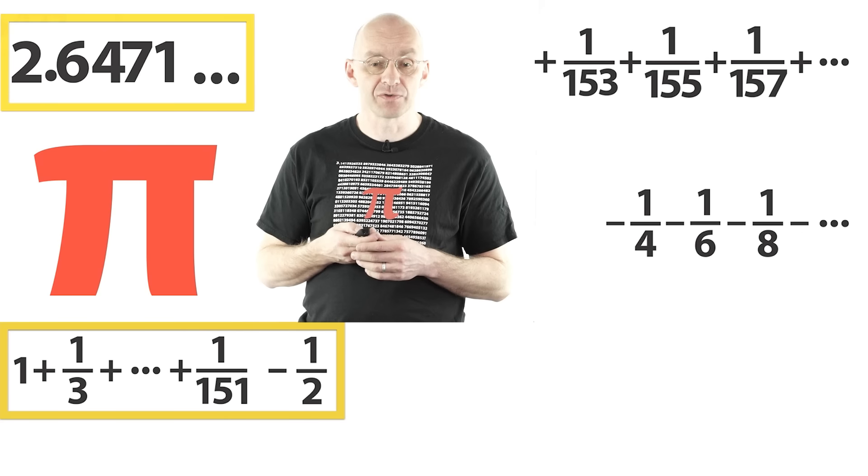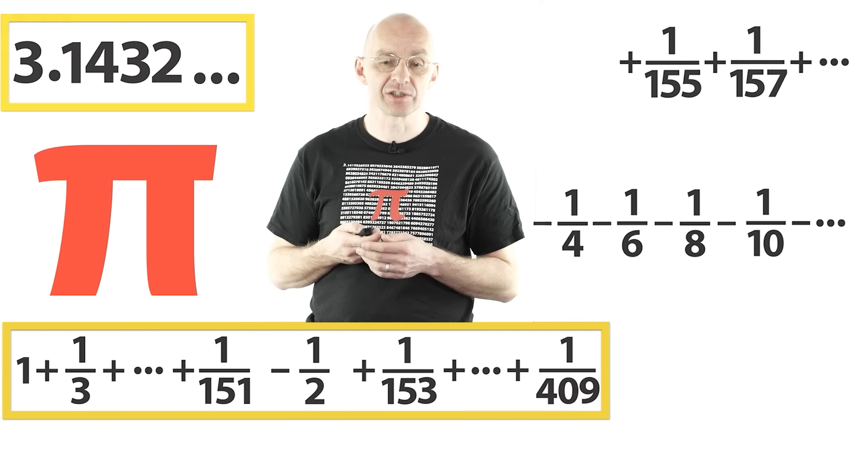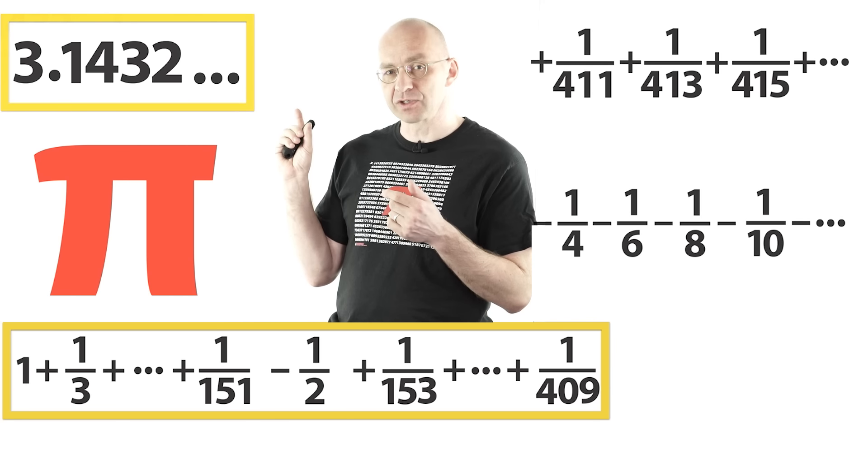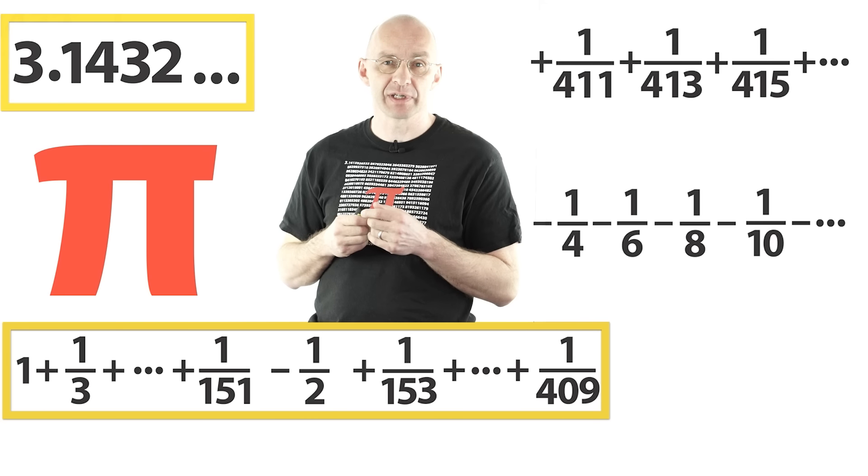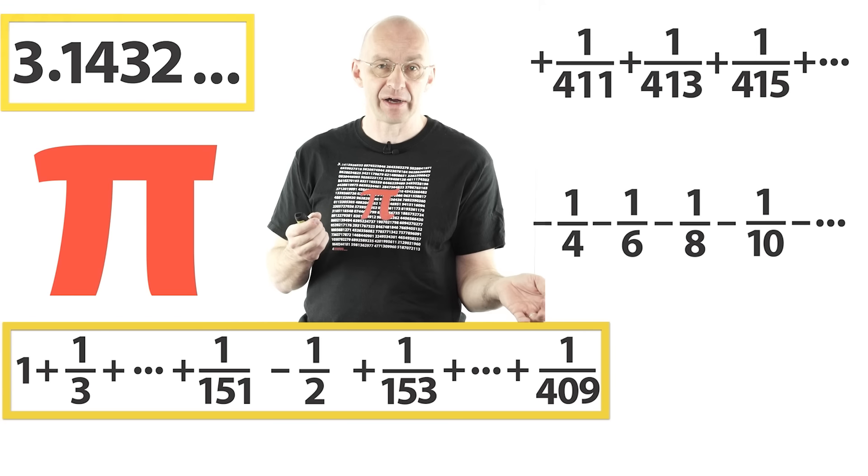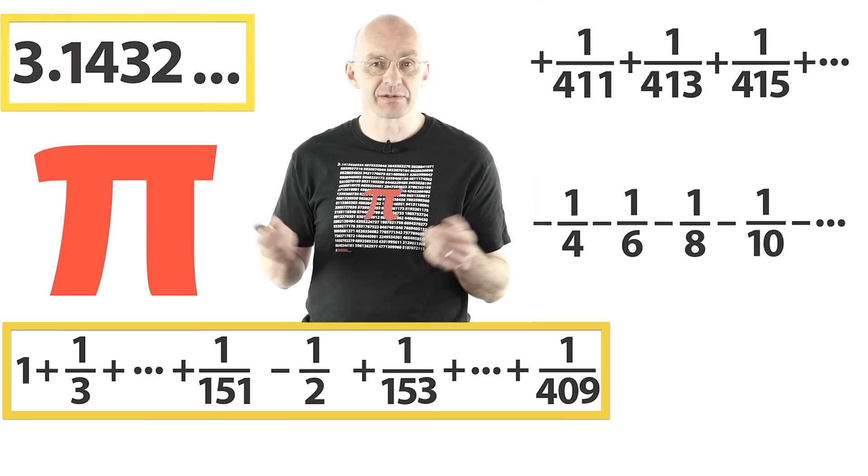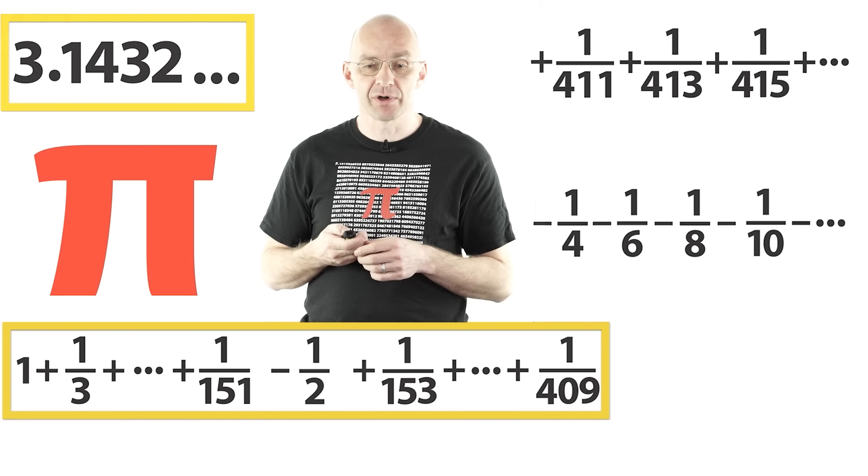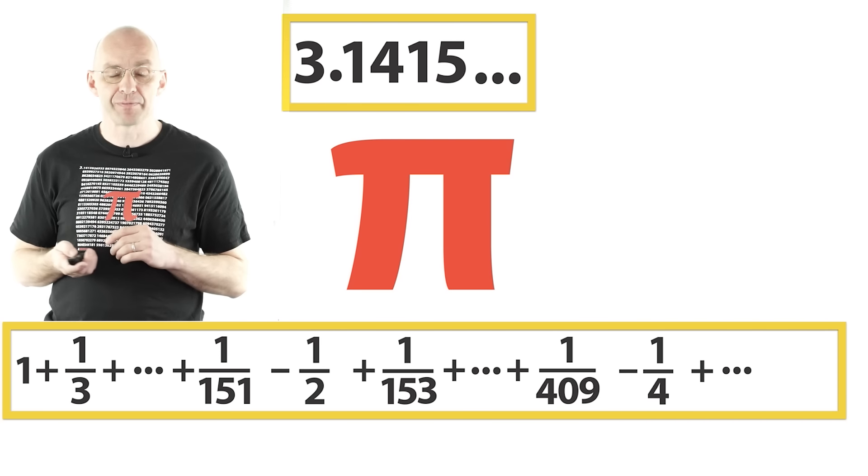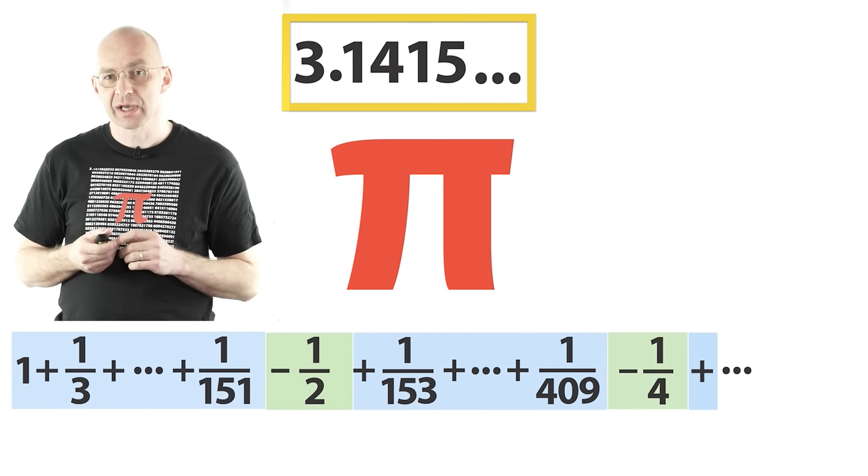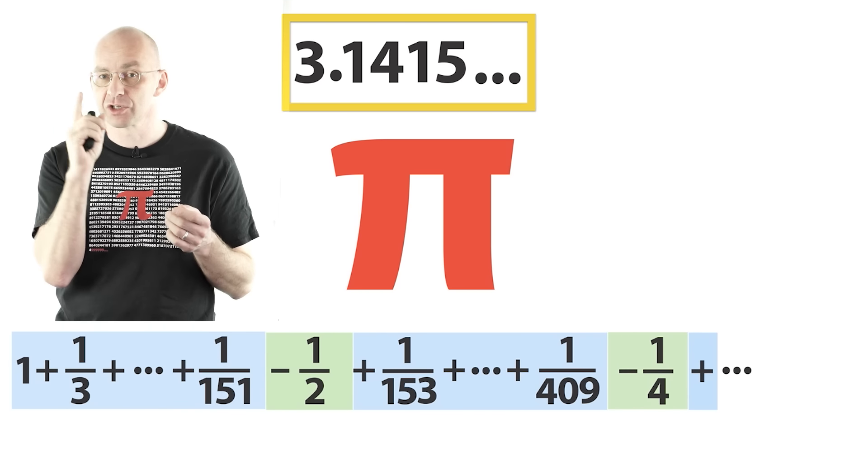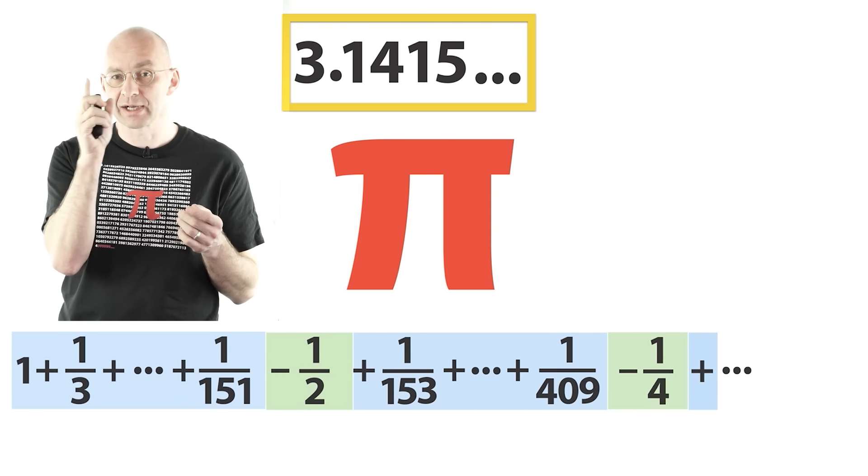That gets us under. Now let's go over again. We actually need quite a few again. But we can be absolutely sure that we can get over because at any stage of this process the positive terms that are left over will add up to infinity and the negative terms that are left over will add up to minus infinity. So I can always be sure that no matter how far I'm under or how far I'm over, I can always take enough terms to get under or over. We just keep on going like this, flip back and forth, and eventually we get to pi.